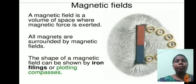A magnetic field is a volume of space where magnetic force is exerted. All magnets are surrounded by magnetic fields. The shape of a magnetic field can be shown by iron filings or plotting compasses.